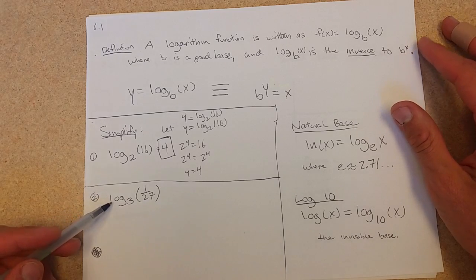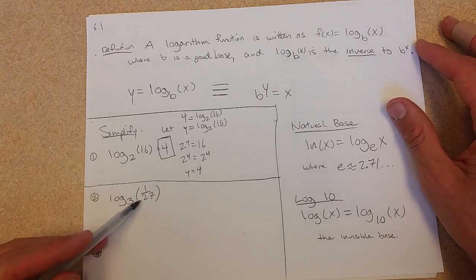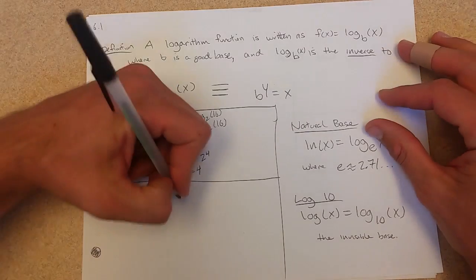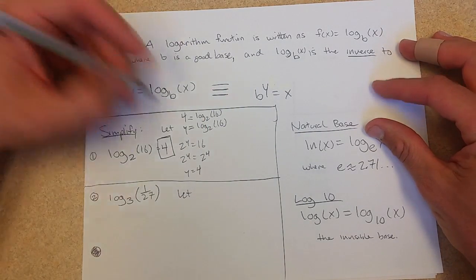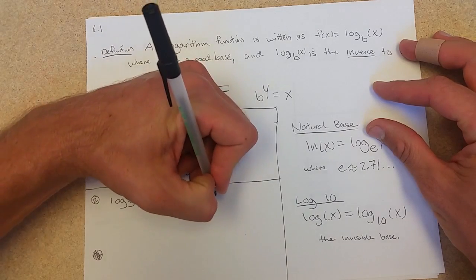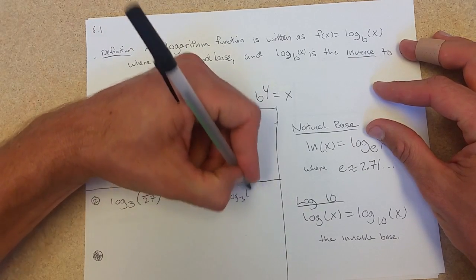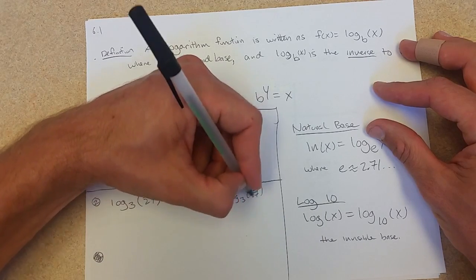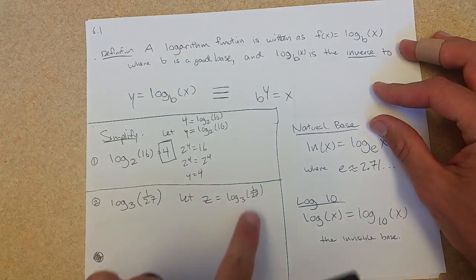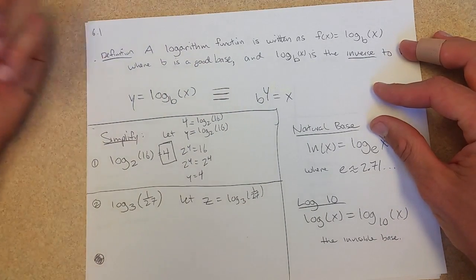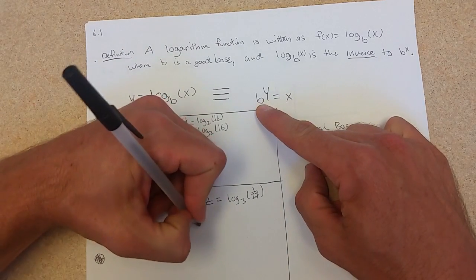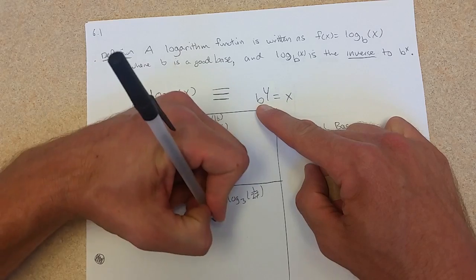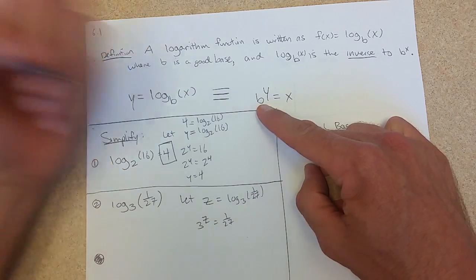Now we're going to have a very similar problem, except we have a fraction. I'm going to do the same first step. Let's use z. Let z equal log base 3 of 1/27. Flip this around, move the base over: 3 to the z equals 1/27.